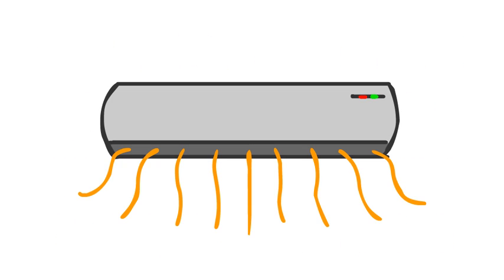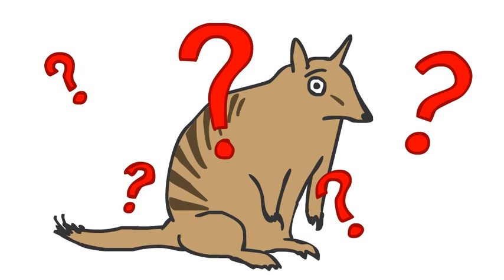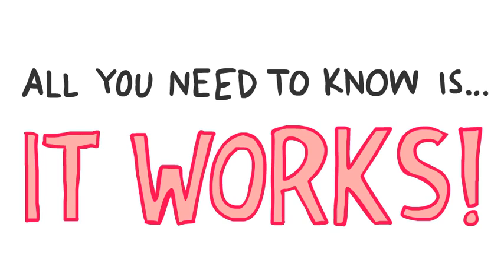When you heat your home with air conditioning, the by-product is cold air and a few people have asked us how this could possibly heat a hot water system. All you need to know is it does work.